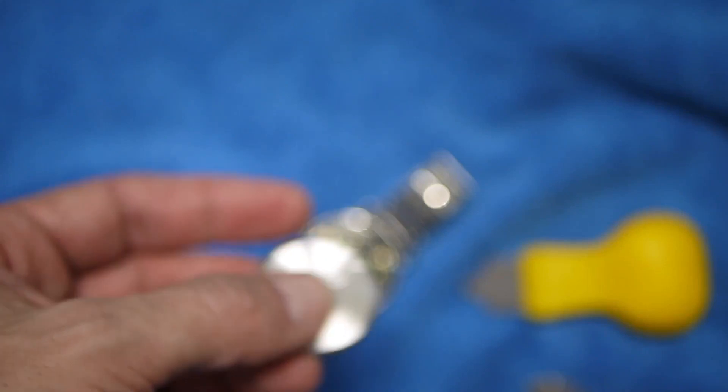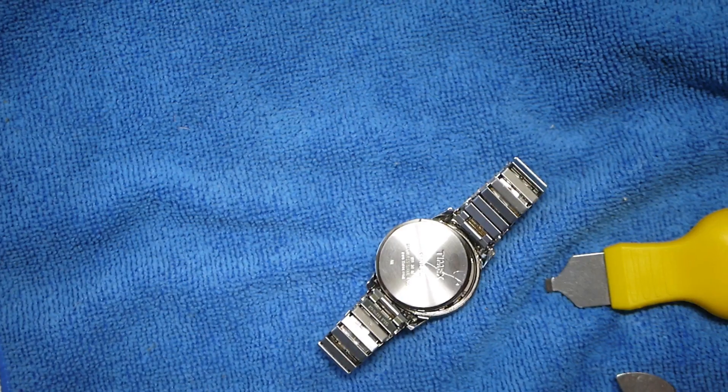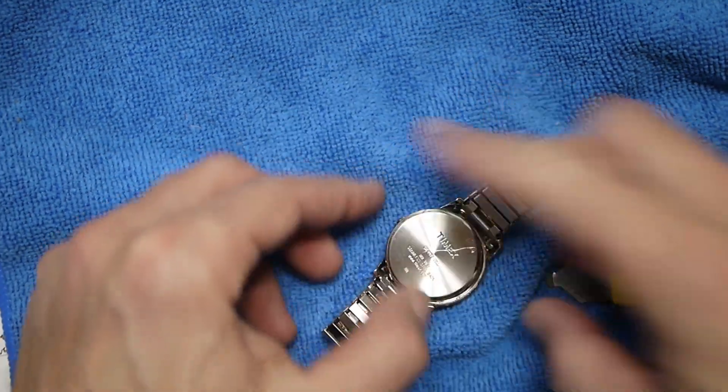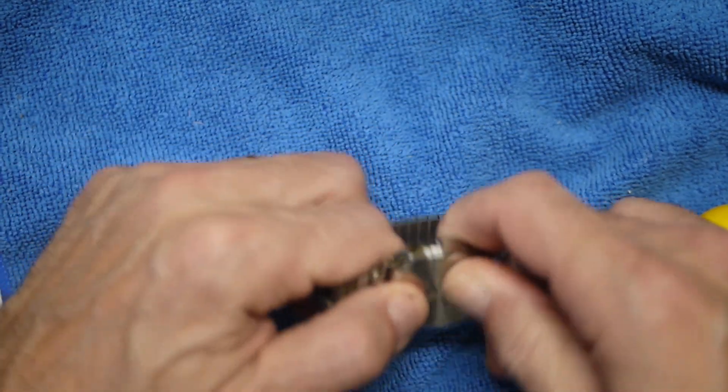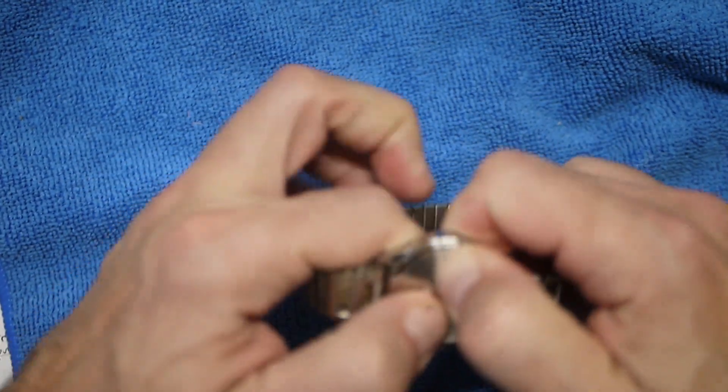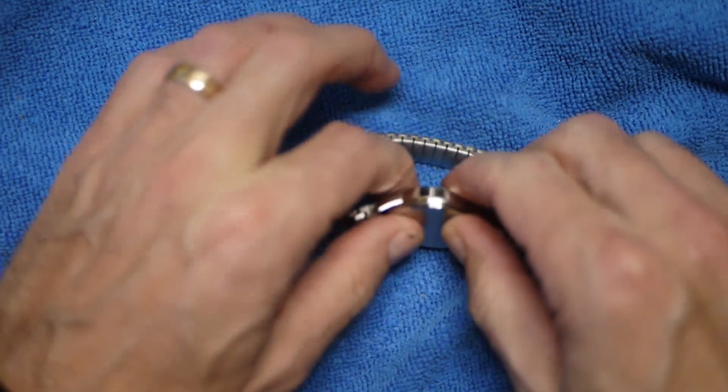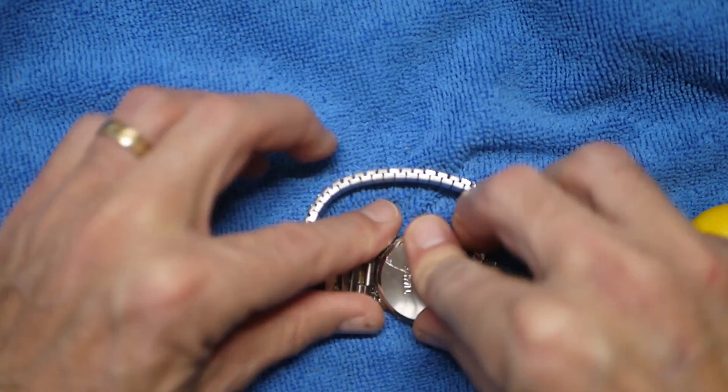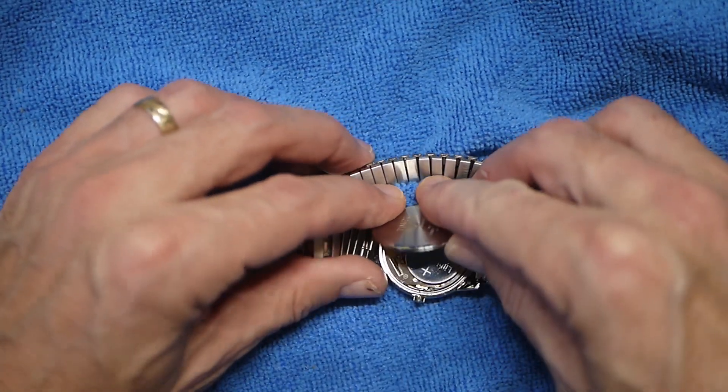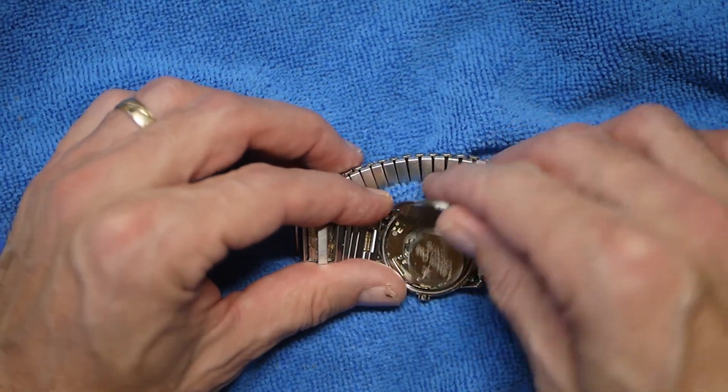Anyway guys, that's how you do it. Now for the hard part, the hardest part could be getting it back on. Many of these you can just push back on with your thumbs. Sometimes you'll have to get your watch press tool out to do it, or maybe you just need to get your band out of the way and push it down.